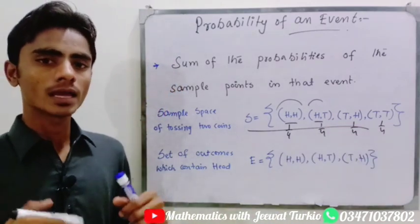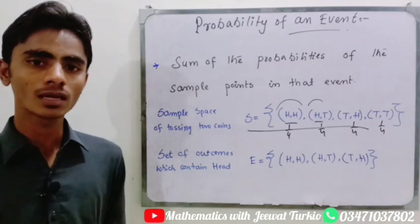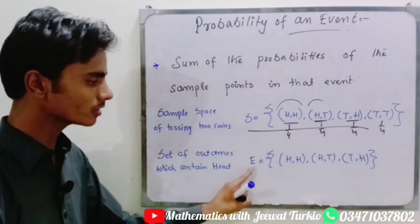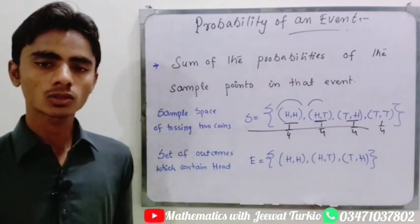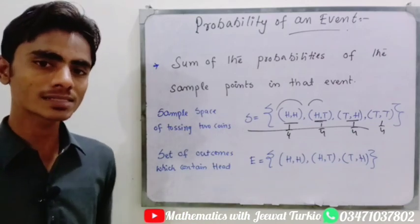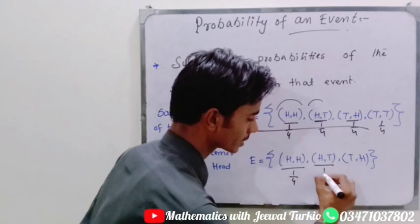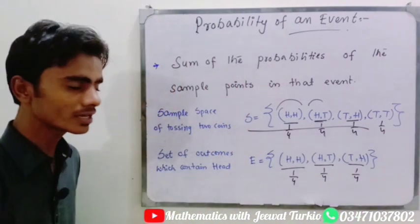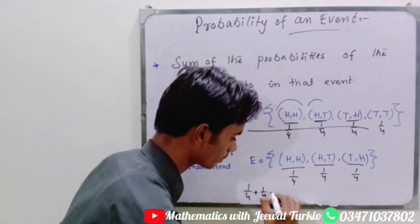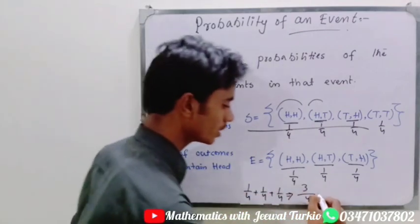If we create an event as the set of outcomes which contain at least one head, that includes HH, HT, and TH — each with probability 1/4. Tail-head also has a probability of 1/4. So the probability of the whole event is simply the sum of these: 1/4 plus 1/4 plus 1/4, which equals 3/4, or 0.75. This is the basic concept of the probability of an event.